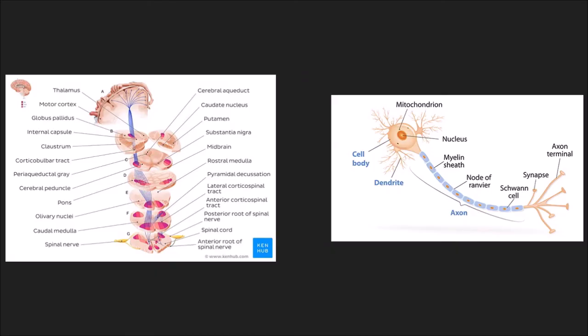Tracts are neural pathways located in the brain and spinal cord — that is, the central nervous system. Each tract runs bilaterally, one on each side of the cerebral hemisphere or in hemisection of the spinal cord. An axon, or nerve fiber, is a long slender projection of a nerve cell or neuron that conducts electrical impulses away from the neuron's cell body.